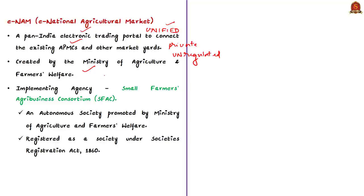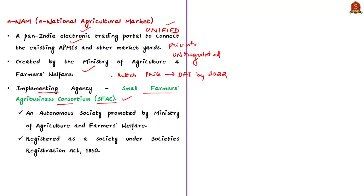By connecting mandis through an online portal, competition is increased for agricultural produce, resulting in better price realization for farmers. This is considered one of the important initiatives aiming at doubling farmers' income by 2022. The implementing agency of e-NAM is the Small Farmers Agri-Business Consortium, that is SFAC. SFAC is an autonomous society promoted by the Ministry of Agriculture and Farmers' Welfare, registered as a society under the Societies Registration Act of 1860.